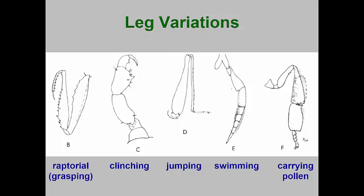Depending on the insect's habits, the legs are often modified for specific purposes. Raptorial or grasping legs are found in the praying mantid and are used to grab and hold prey. Lice have special modifications of the tarsi to hold onto host hairs, called clenching. Many insects jump, and this often requires enlargement of the femur of the hind leg. Swimming insects often have leg segments streamlined and flattened to serve as paddles. Many bees have special hair patches on their tibias for holding pollen collected from flowers.